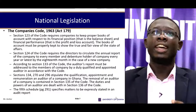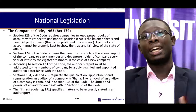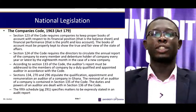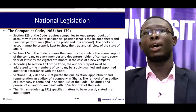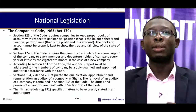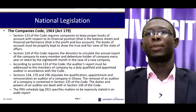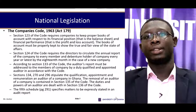In Ghana, the Companies Code, that is Act 179 of 1963, is the main legislation that governs or regulates the activities of companies. Section 123 requires companies to keep proper books of accounts. Section 124 requires directors to circulate the annual report to every member and debenture holder every year, or latest by the 18th month for a new company. Section 133 states that the audit report must be addressed to members of the company. Sections 134, 270 and 296 stipulate the qualification, appointment and remuneration of an auditor.